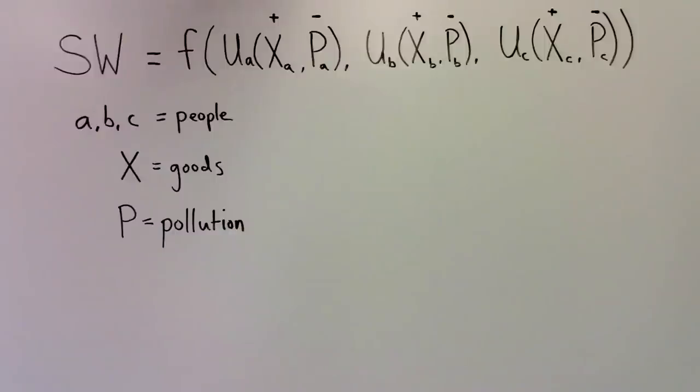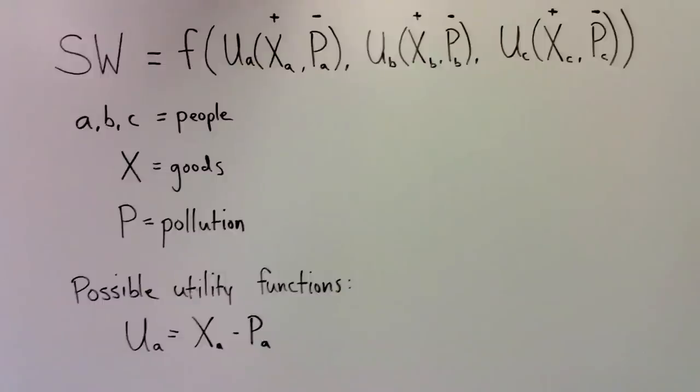Note that we have not said how much people's utility will change with, say, an additional one dollar of consumption, or an additional one pound of pollution. For example, A's utility function could be given by the following equation: U equals X minus P, where X is measured in dollars and P is measured in pounds. However, it is probably unrealistic that the marginal dollar of consumption would increase A's utility by the same amount, regardless of whether his consumption is very low or very high.